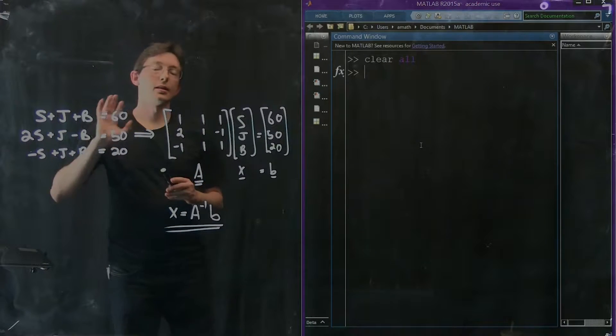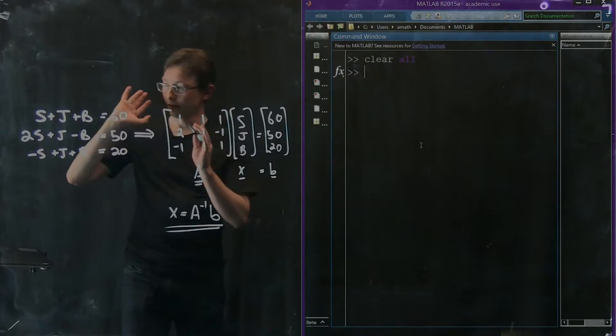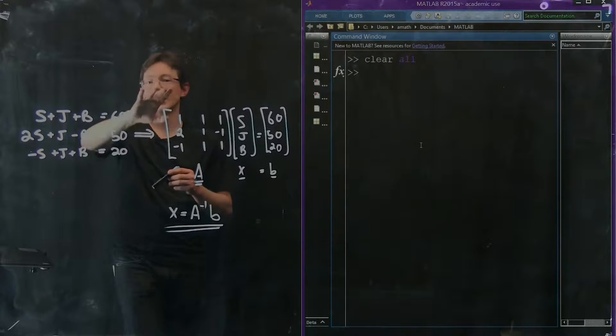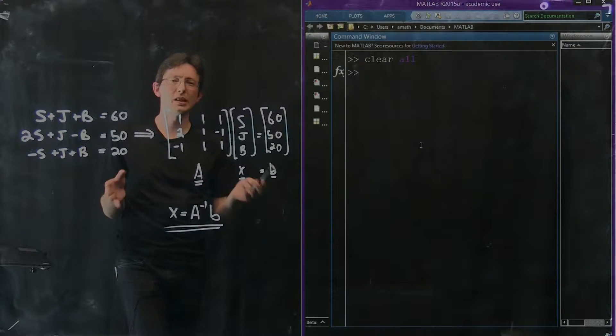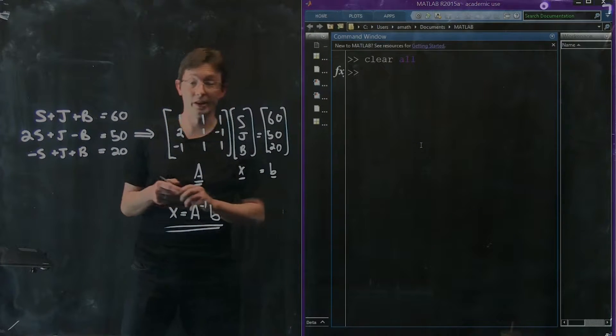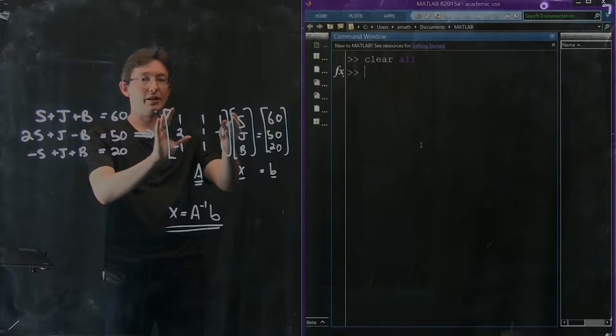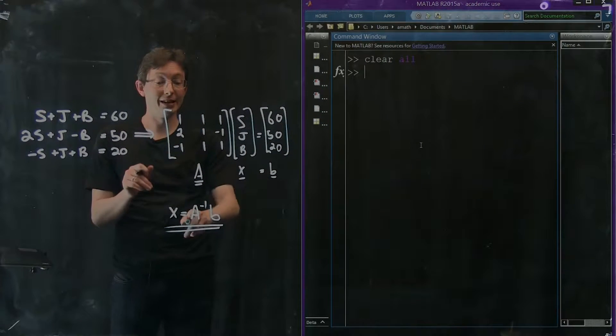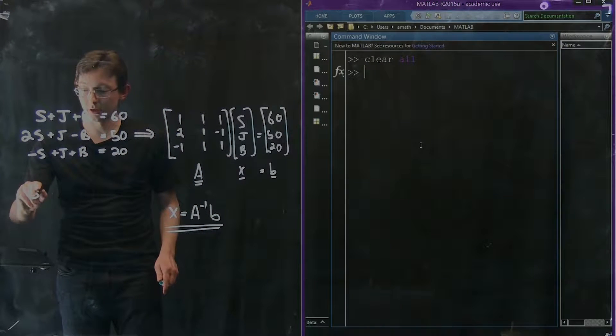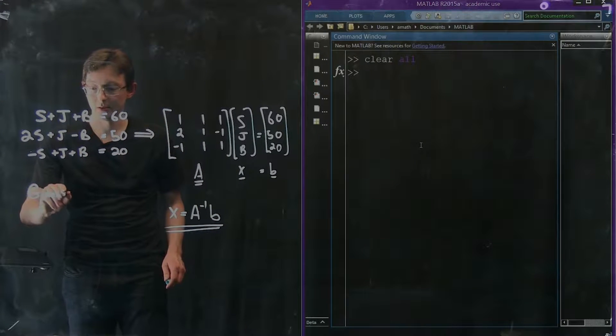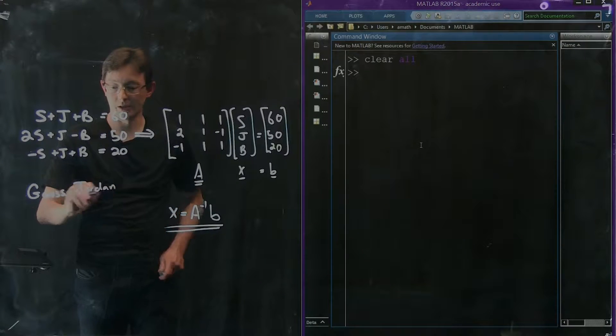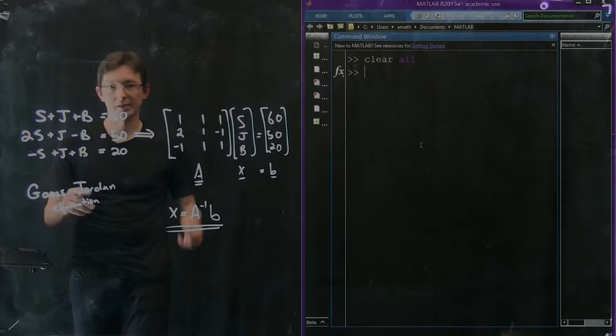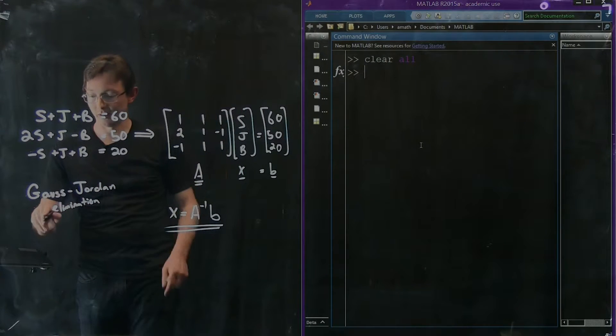It's often the case that something might be very difficult to do by hand, like solving a system of equations. The procedure we learned last time is called Gauss-Jordan elimination - taking matrix A and row reducing it while doing the same thing to an identity to find the inverse of A. Gauss-Jordan elimination with back substitution means plugging things back in.